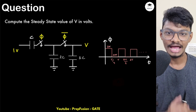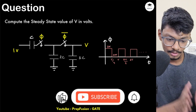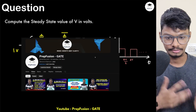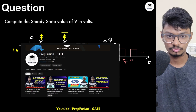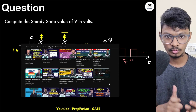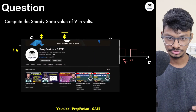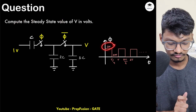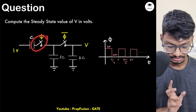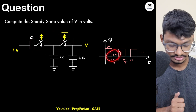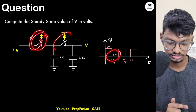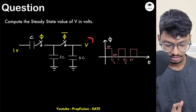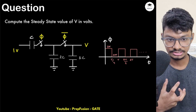Hey everyone, welcome back to Prefusion. I am Anish and today we will start with Part 2 of most important questions from switched capacitors. Here is Part 1 — you can go and watch it. Many of you commented the answer to the question but none of you are correct. Today we will try to solve this question: find the steady state value of V, given a switching waveform where phi high means one switch is ON and the other is OFF, and vice versa.